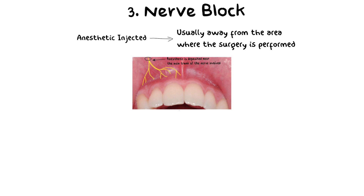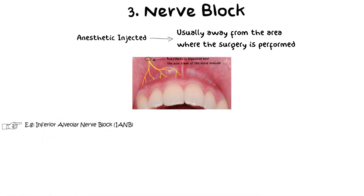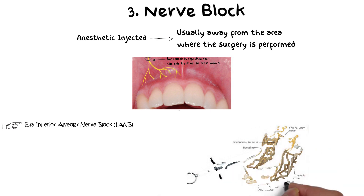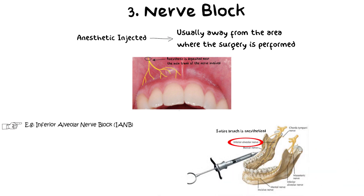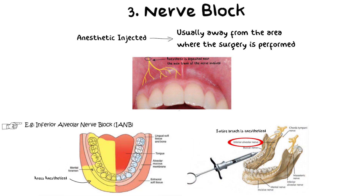A very commonly used technique is the inferior alveolar nerve block, or IANB. In this block, the entire division of the inferior alveolar nerve is anesthetized, blocking all areas supplied by this nerve — usually the mandibular posterior teeth. Almost all mandibular posterior teeth are rendered pain-free with a single injection, allowing surgery on any of those teeth. You also need to block the lingual and buccal nerves before performing complex procedures such as extractions.